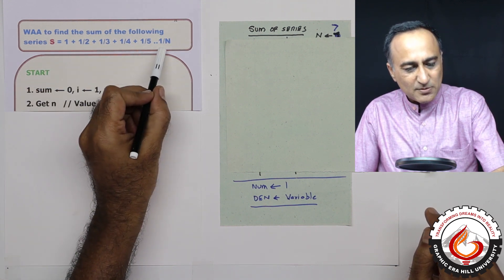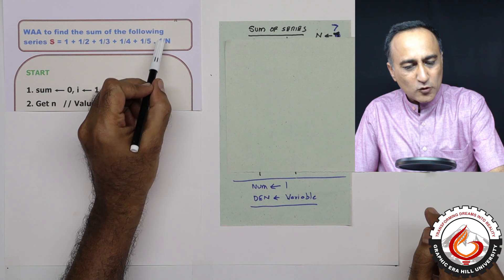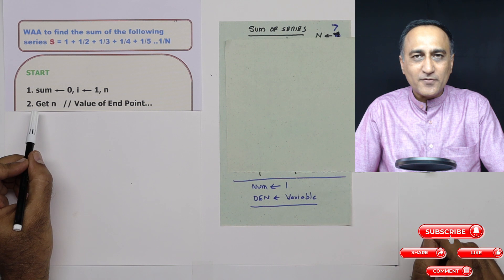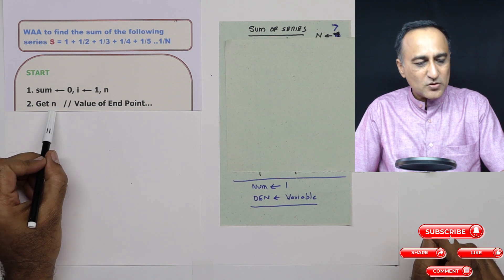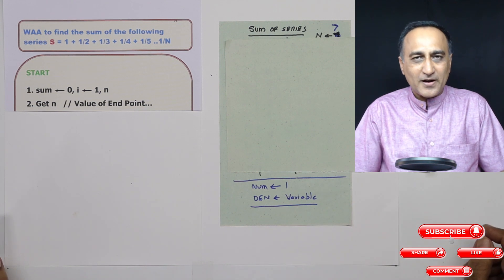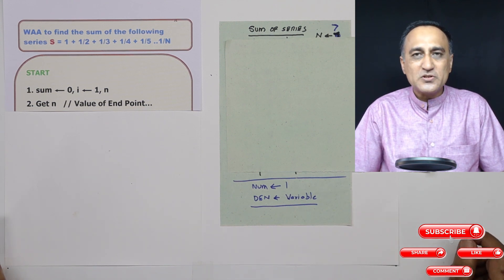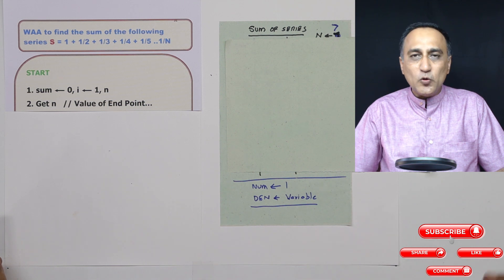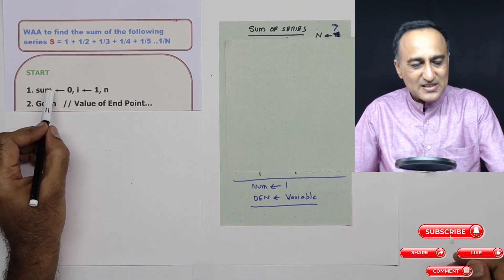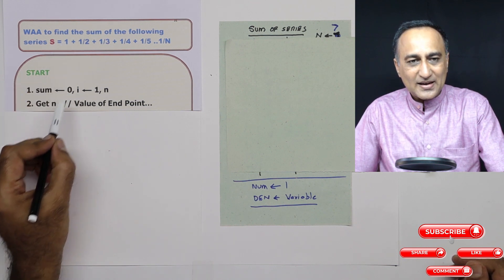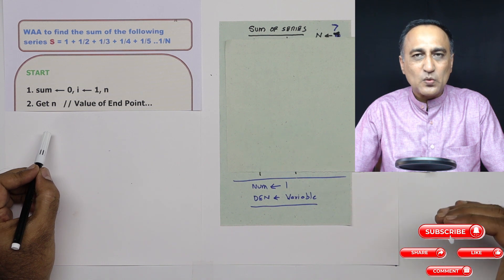First, in order to find the sum of this particular series, I need to know the value of n, so I am going to ask the user to enter the value of n. Suppose the user enters the value of n as 5. What I am going to do is say repeat for count 1, 2, 3 till 5, and in that loop I will say sum is sum plus 1 upon i, then increase i to i plus 1.